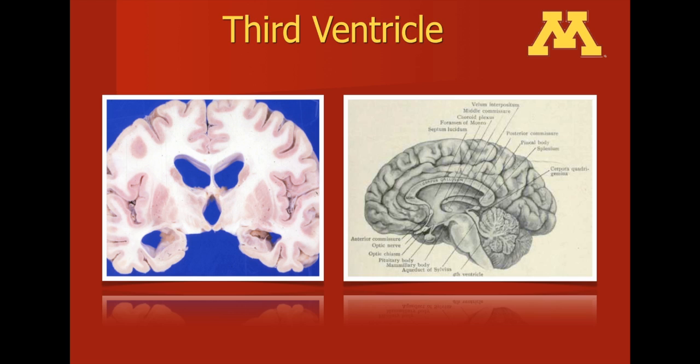Also appreciate on this image how a third ventriculostomy can be performed by traversing the cortex, the lateral ventricle, and into the third ventricle, where a hole is made at the floor of the third ventricle.